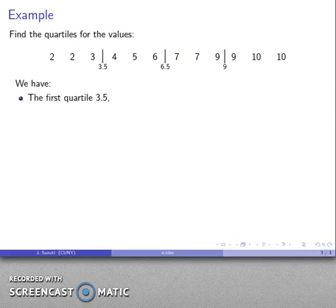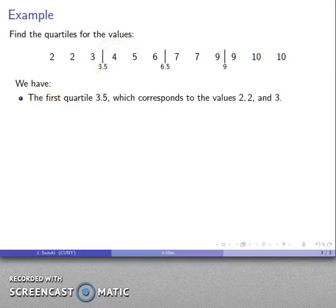And so we have our first quartile, 3.5. This is the first quartile. Important to remember how you speak influences how you think. The first quartile is the number, and this corresponds to the values 2, 2, and 3. This is not the first quartile. These are the values produced by the first quartile. The values that correspond to the first quartile.